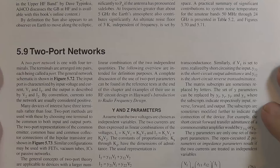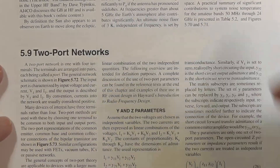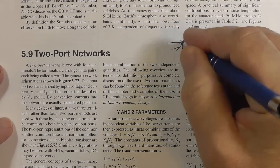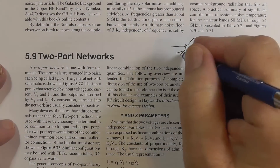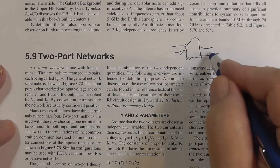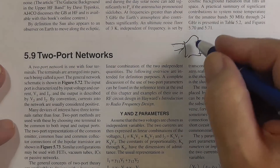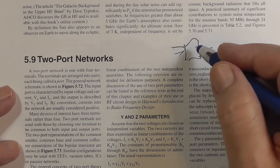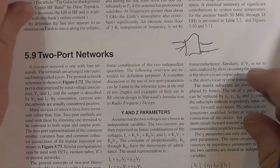Before we talk about vector network analyzers, we need to talk about what's being analyzed. What's being analyzed is called a two-port network — that means there's an in and an out. In amateur radio practice, this can be anything: not just an antenna, but a piece of coax, an amplifier, a transmitter, a receiver input filter — just about anything.